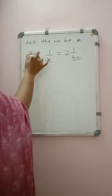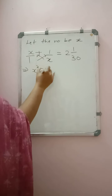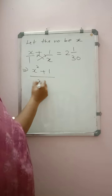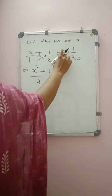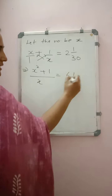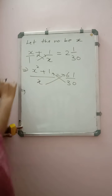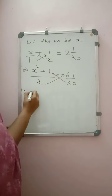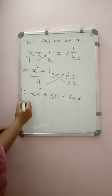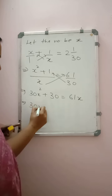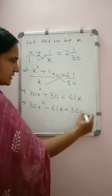We will simplify by cross multiplication. x² + 1 / x = 61/30 (converting 2 1/30 to an improper fraction: 30×2 + 1 = 61/30). Again cross multiplication and shifting numbers: 30x² + 30 = 61x. Shifting all to one side: 30x² − 61x + 30 = 0.